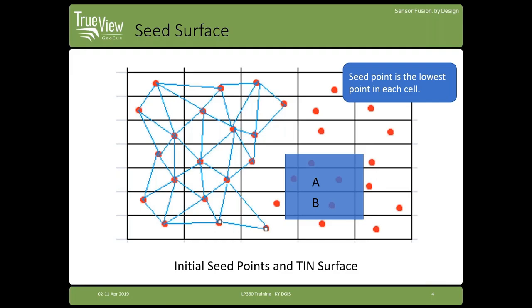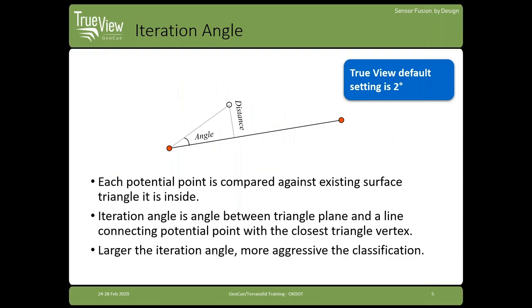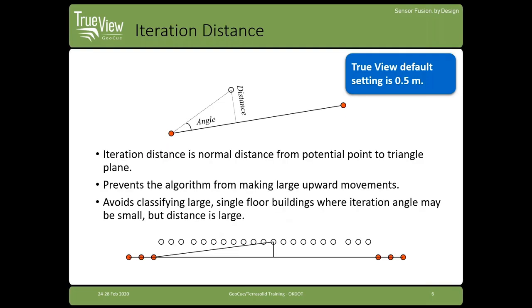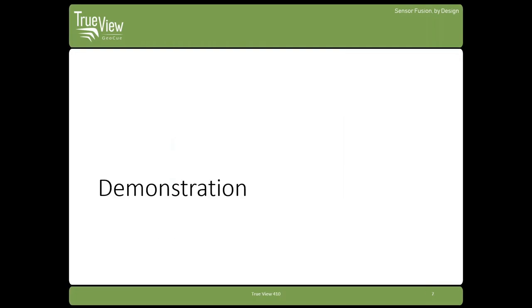You want to set your seed sample size to be a little bit bigger than the largest building in your data set. For the angle parameter, for TrueView 410 data we've found that two degrees is a very solid default setting — you get very nice results with that. These are user-adjustable should you need to play with them, but we really recommend that two-degree default. There's also a distance parameter; for TrueView data about half a meter is pretty good.